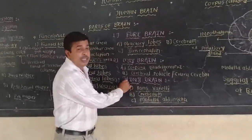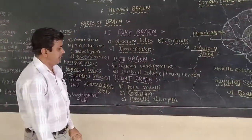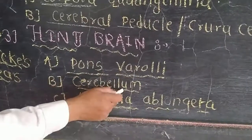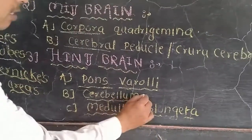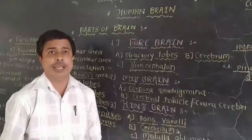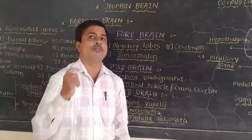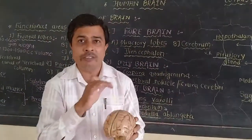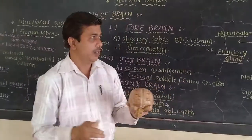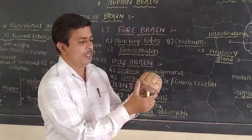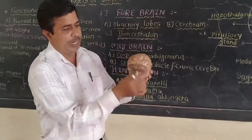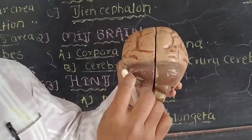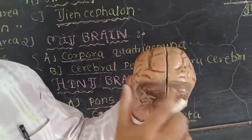The last part is the hindbrain, also known as the rhombencephalon. It is divided into three parts: the pons varoli, the cerebellum, and the medulla oblongata. The cerebellum is the second largest part of the brain — the largest being the cerebrum, which occupies 85 percent. The cerebellum is present below the occipital lobes on the posterior side of the brain, and it occupies about eleven percent of the brain.